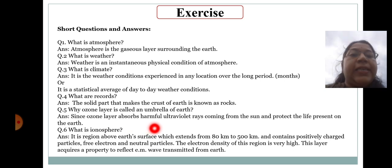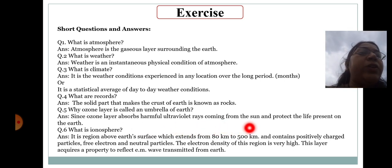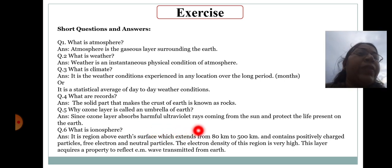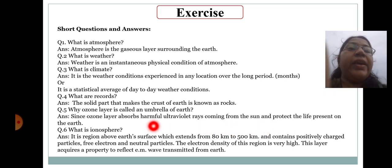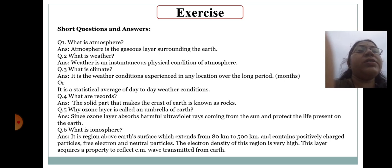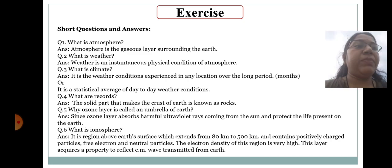What is ionosphere? It is the region above earth's surface which extends from 80 kilometers to 500 kilometers and contains positively charged particles, free electrons, and neutral particles such as neutrons. The electron density of this region is very high. This layer acquires a property to reflect electromagnetic waves transmitted from the earth. You can read these carefully as your examination is coming soon, probably in November.